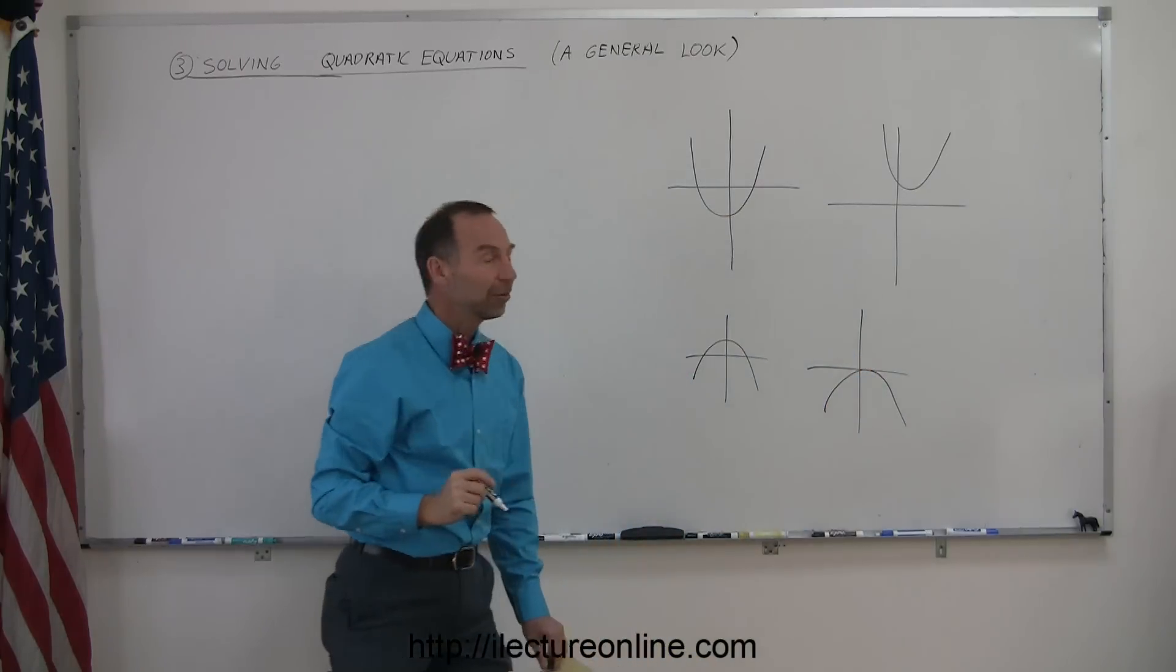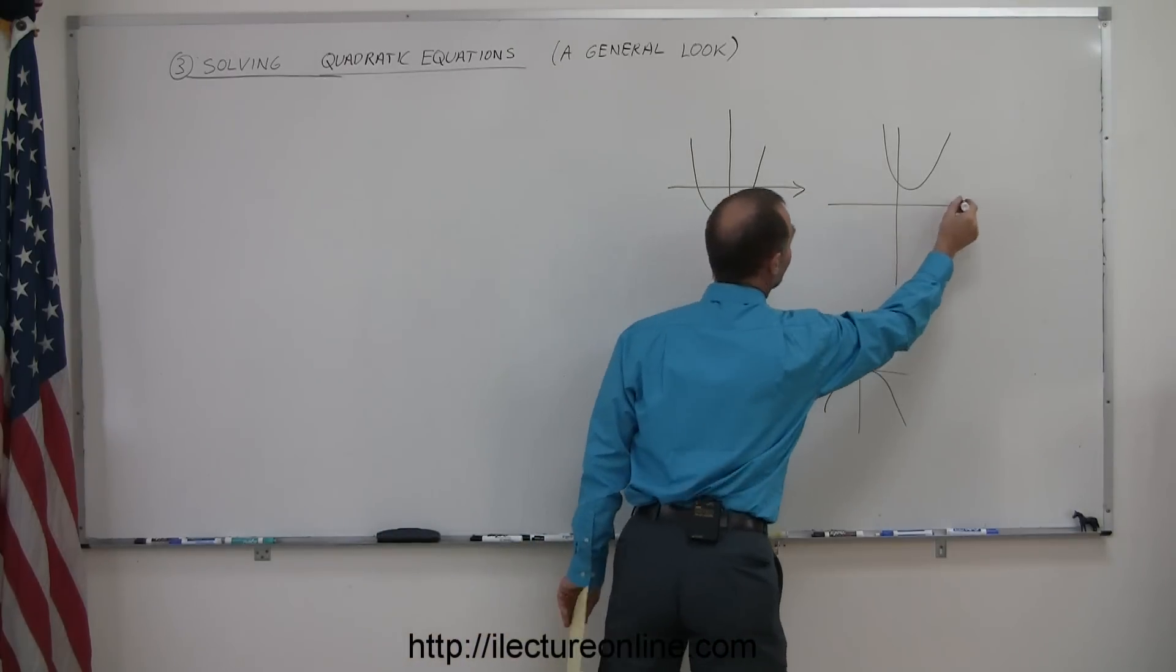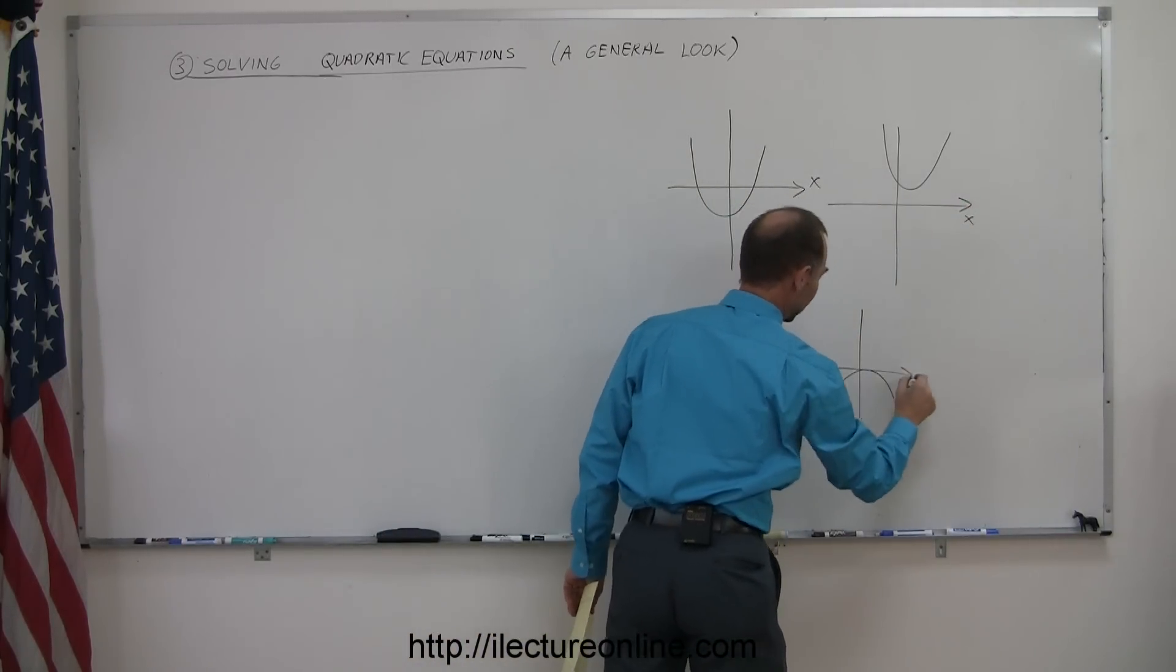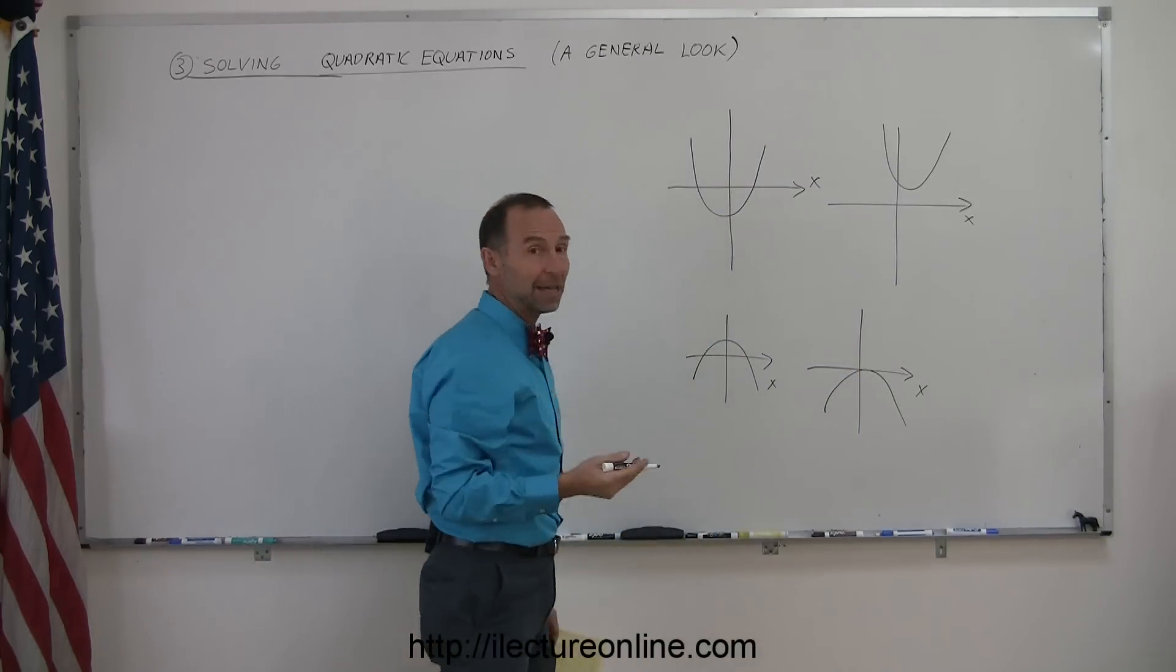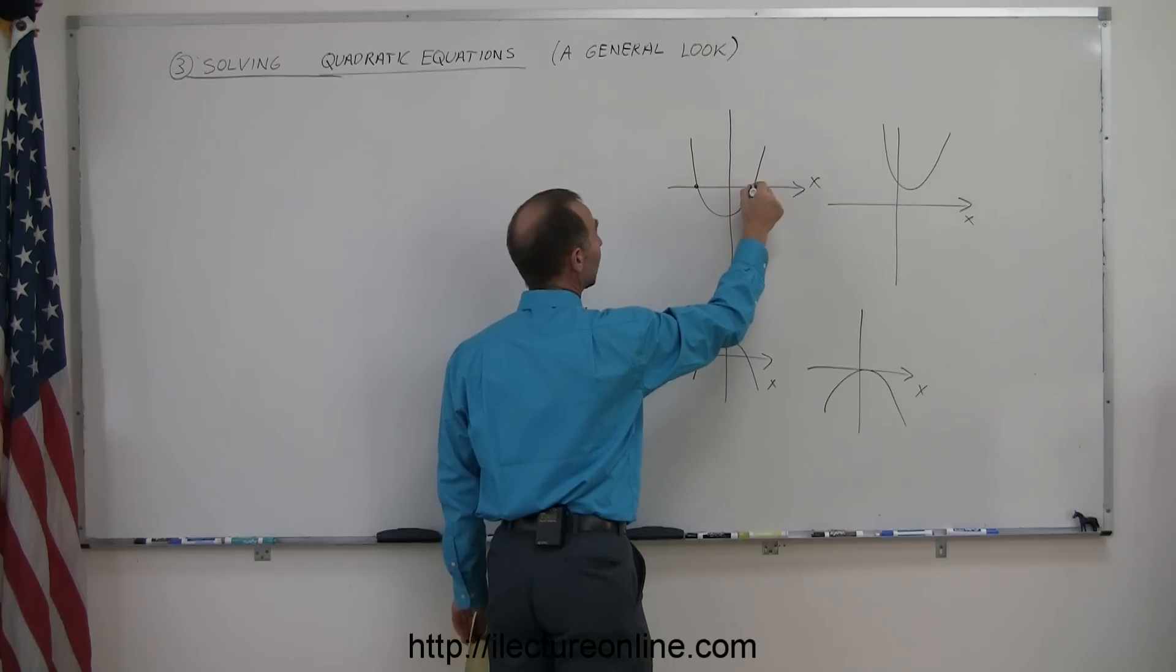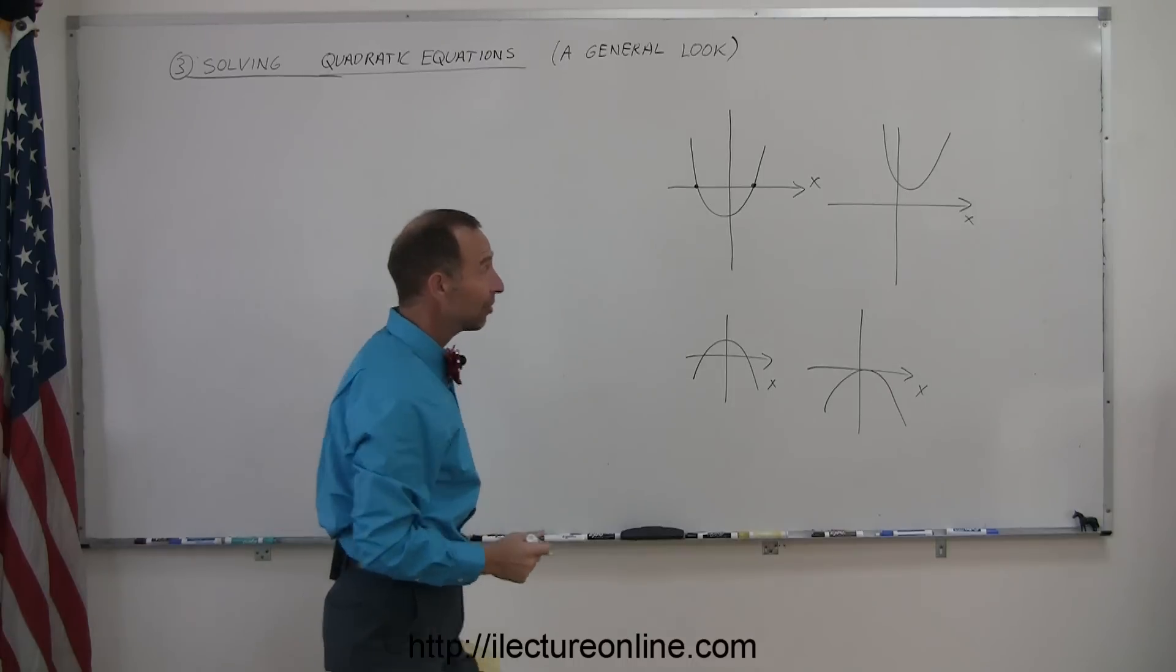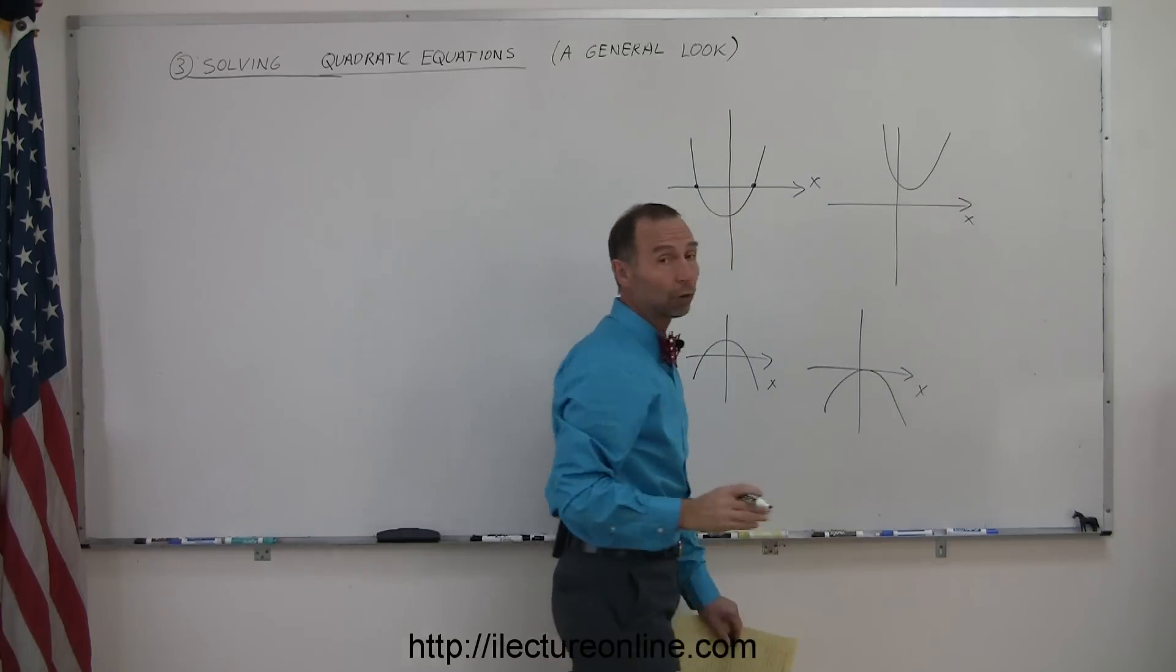And notice, in some cases the quadratic equation will cross the x-axis. So remember, these are your x-axis right there. X-axis, x-axis, there's your x-axis, there's your x-axis. So in some cases, the quadratic equation, or at least the graphical representation of the equation, will cross the x-axis, and those are called your roots or your solutions to the quadratic equation. But in some cases they will not, like in this case it doesn't cross, so there's no root or no solutions.